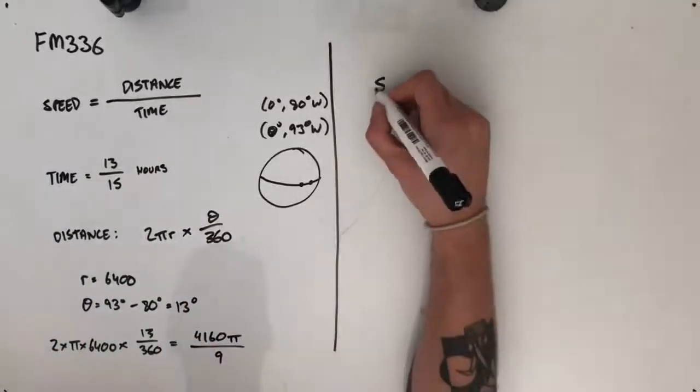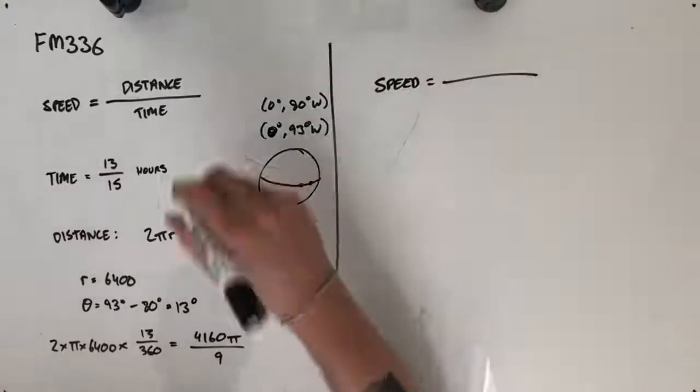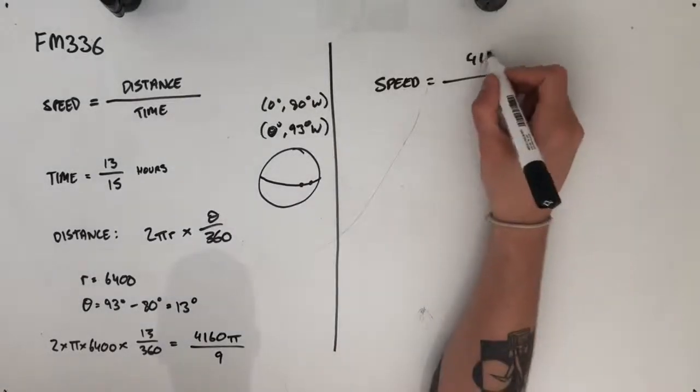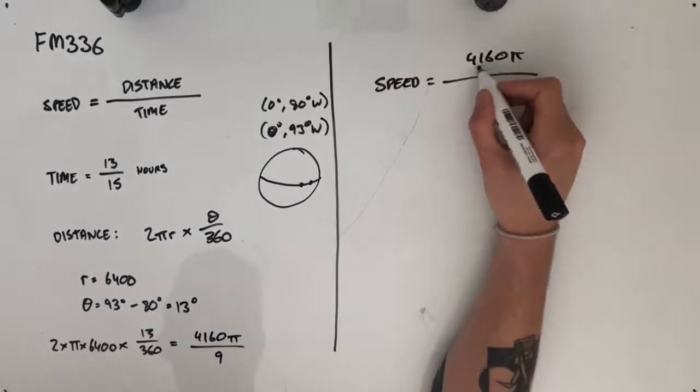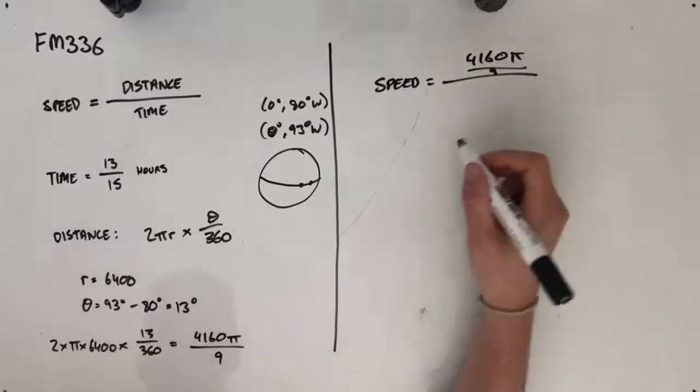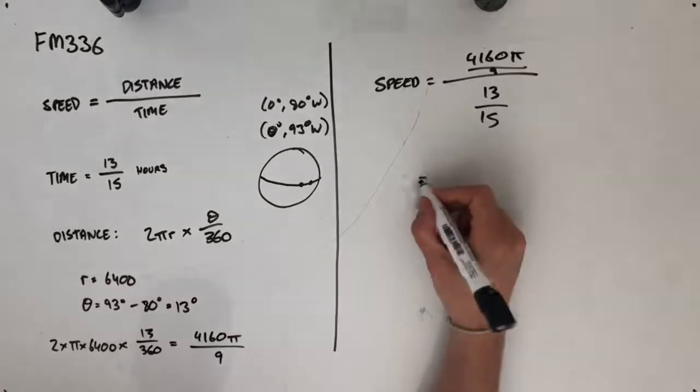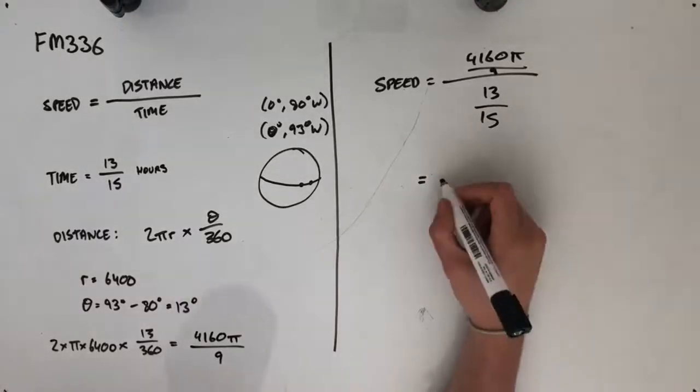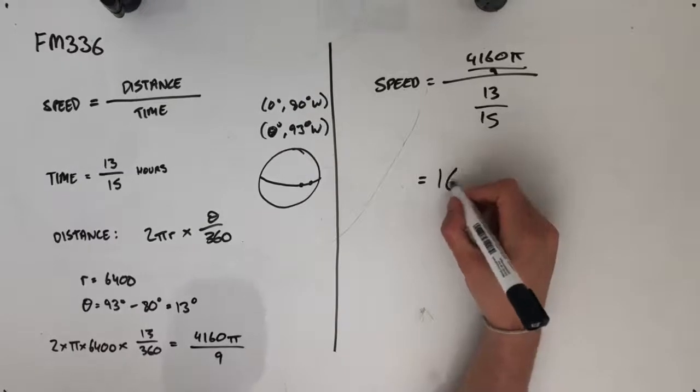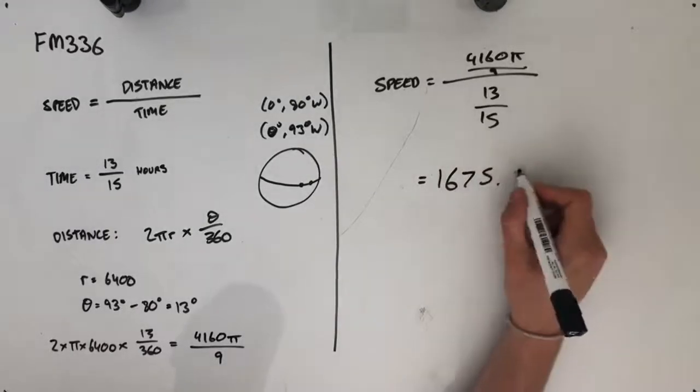Now bringing it all together. Speed equals distance over time, so we're going to substitute our value for distance, which was 4,160 pi over 9, all over 13 over 15. Plugging that all into a calculator should get you an answer, rounded to one decimal place, of 1,675.5.